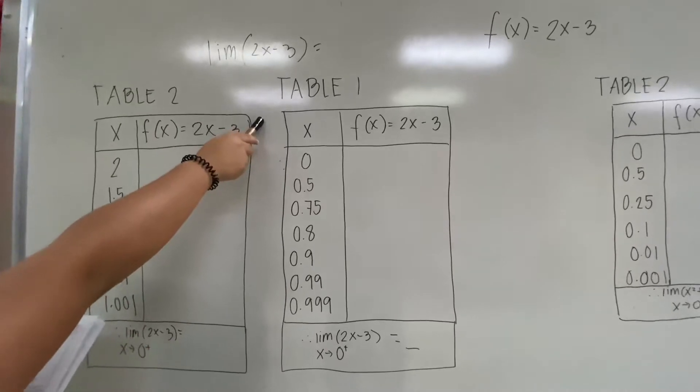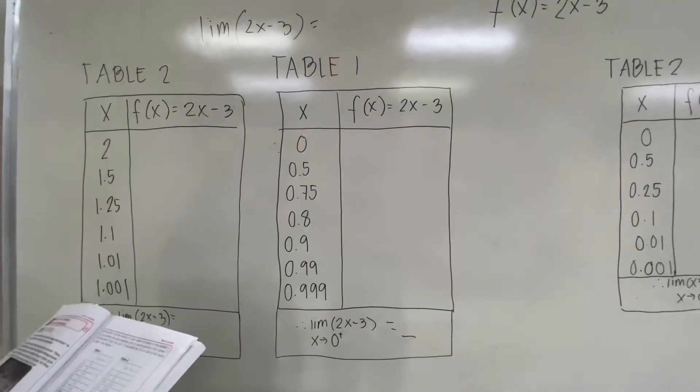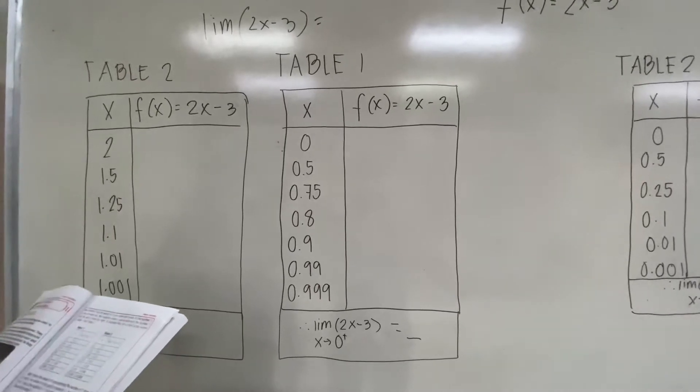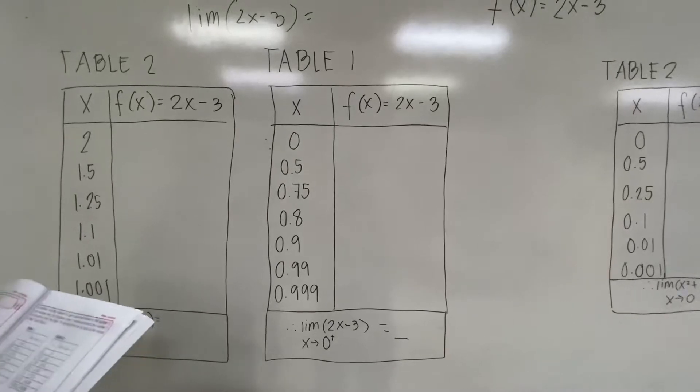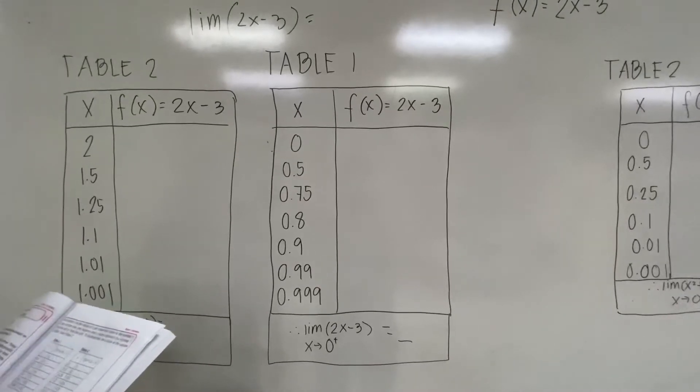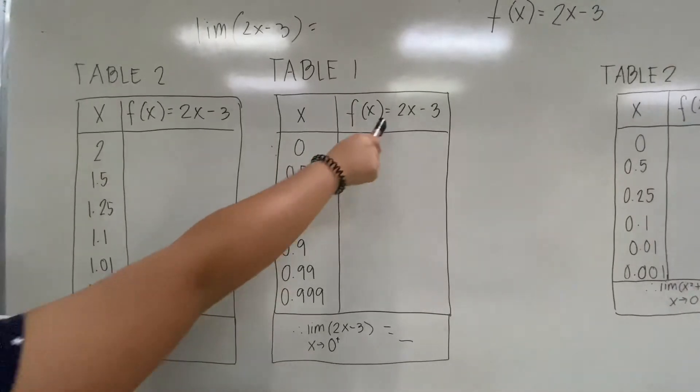Table 1 shows the values of x approaching the number 1 from the left. That is, the values are getting closer to 1, but they are all less than 1. How do the values of y = f(x) behave as a result? So, here is 0, and here is 2x - 3. With that, you get -3.